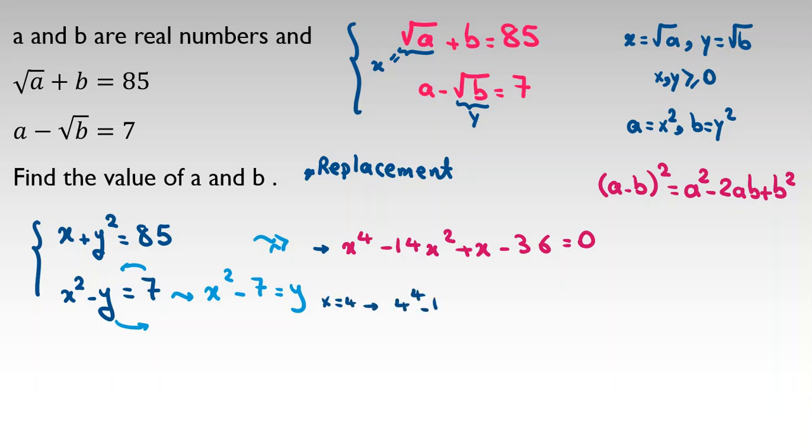4 to the 4 minus 14 times 4 squared plus 4 minus 36, we want to see if it's 0 or not. For checking this, I divide both sides by 4. 4 cubed minus 14 times 4 divided by 4 plus 1 minus 9 equals 0. So 64 minus 56 plus 1 minus 9 equals 0, minus 64. So it is 0, so x equals 4 is one root.